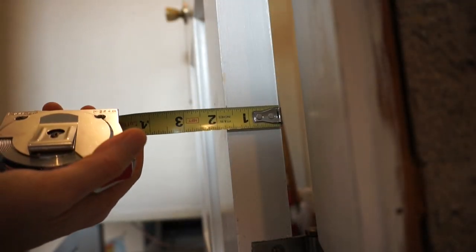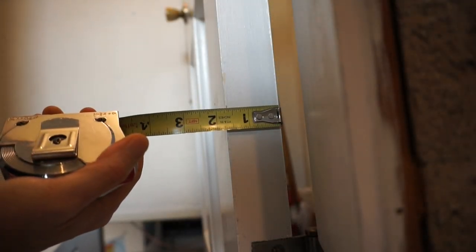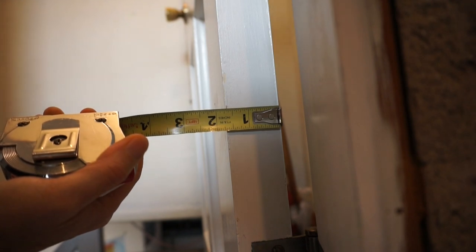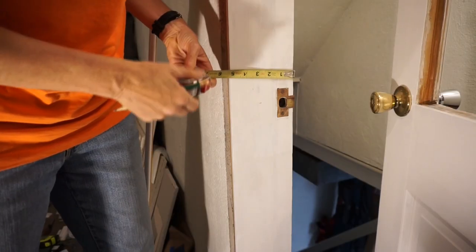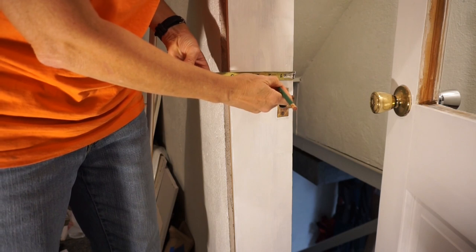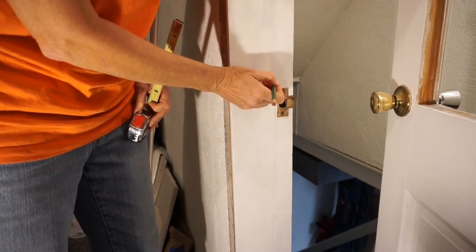Measure the thickness of the door. This looks to be about an inch and three quarters. Mark the door width measurement onto the door jamb near the latch.